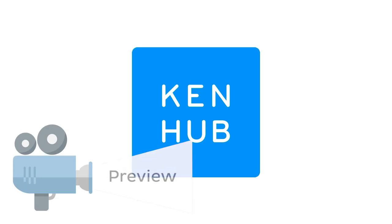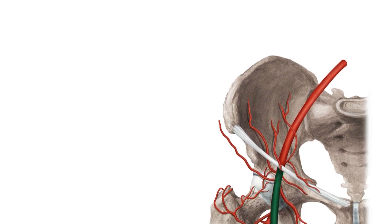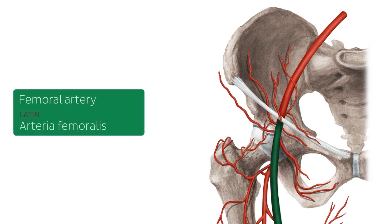Hello everyone, this is Megan from KenHub and welcome to our tutorial on the femoral artery and its branches. The femoral artery is the major blood supply to the lower limb. It supplies most of the thigh as well as the entirety of the leg and foot. During this tutorial we'll go over the anatomical course of the femoral artery and talk about its branches, and finish up with a few clinical points helpful to know in clinical practice.